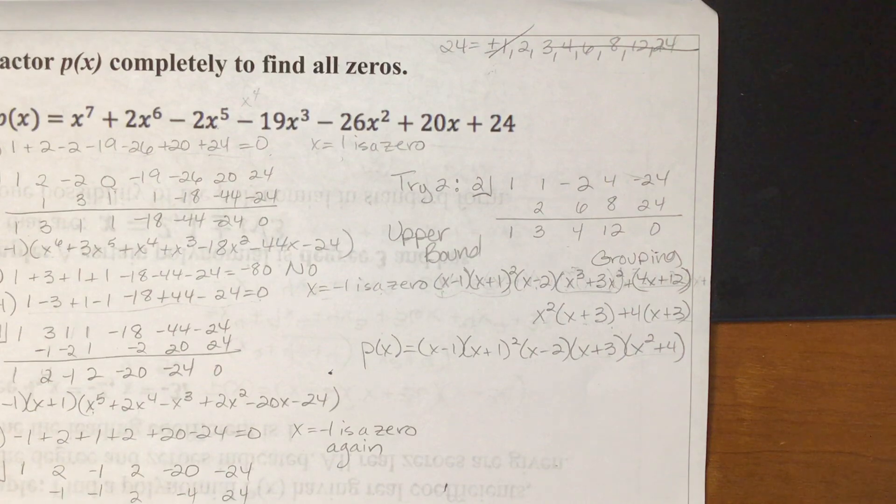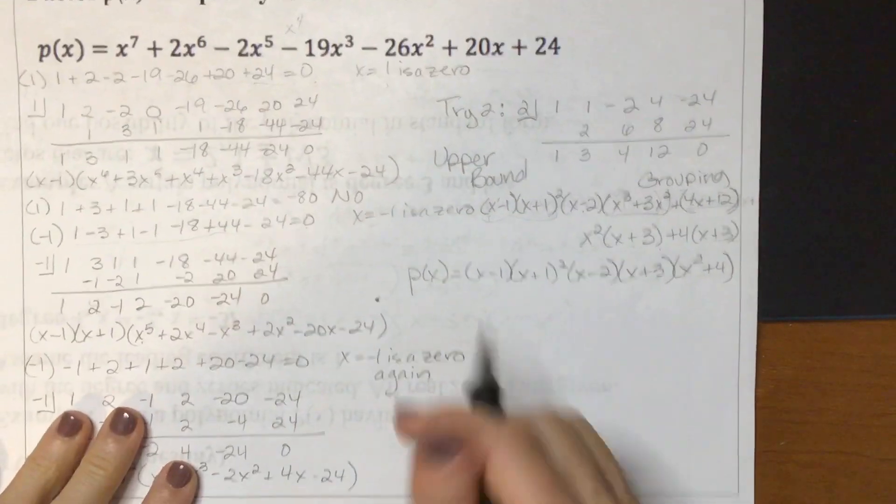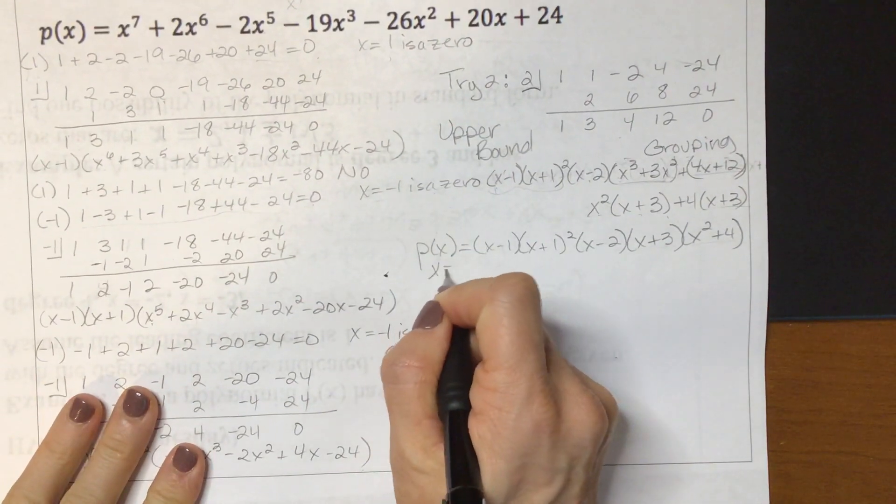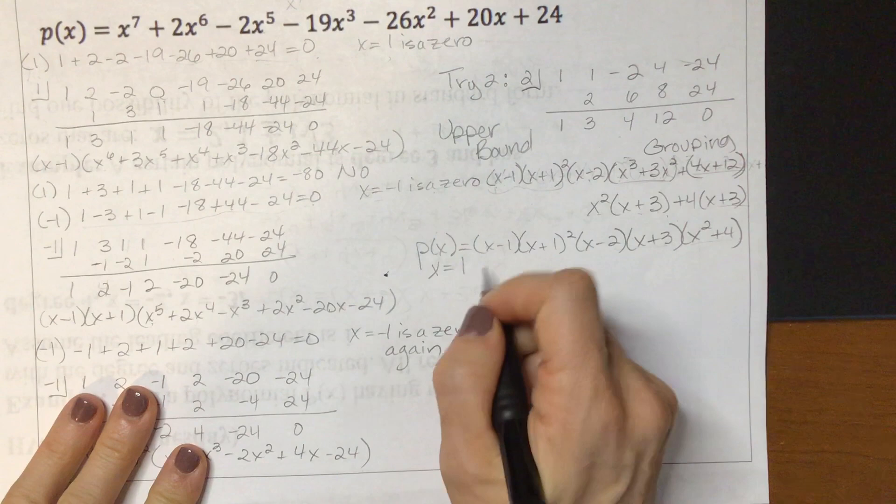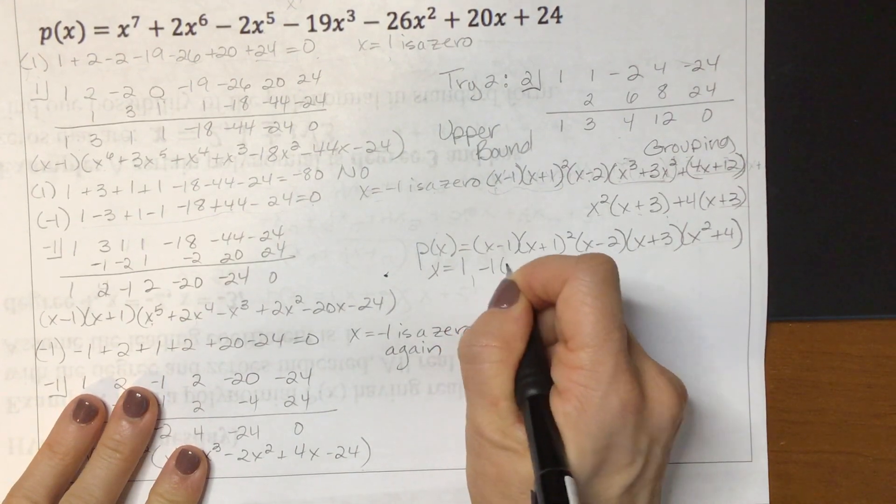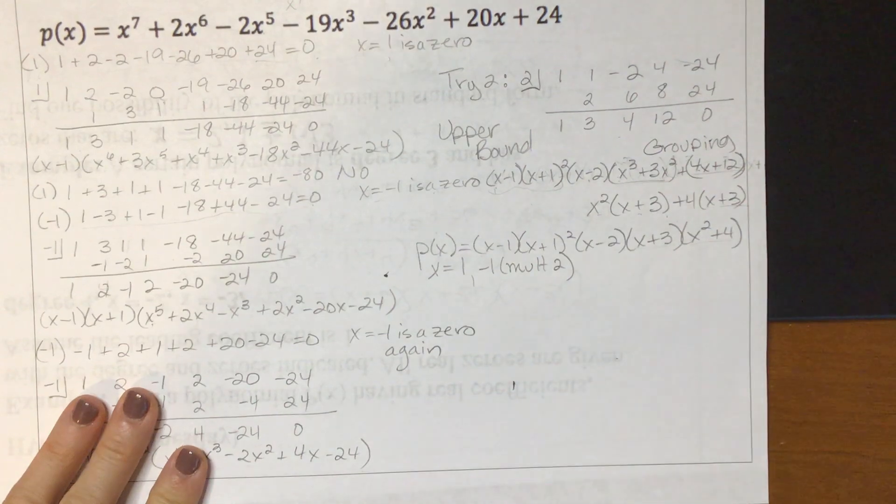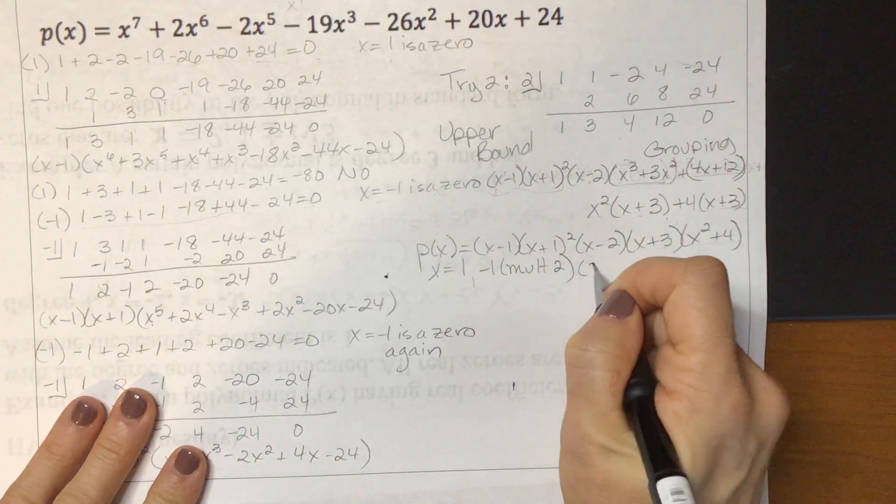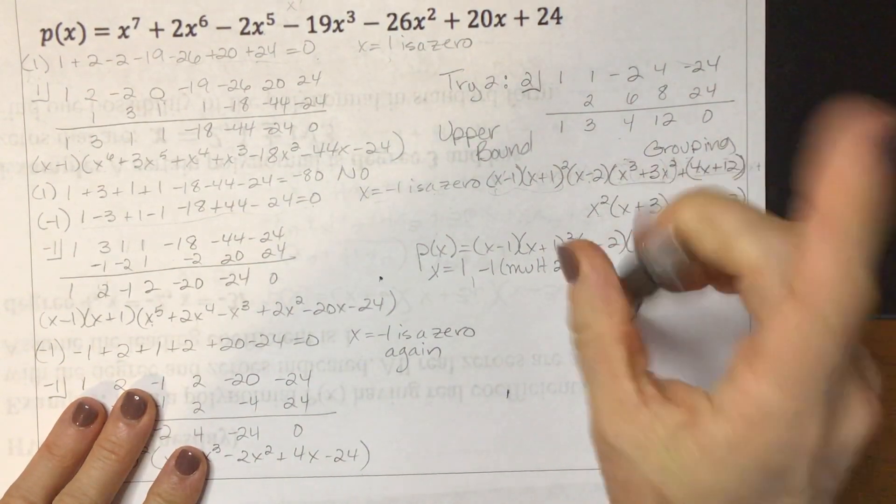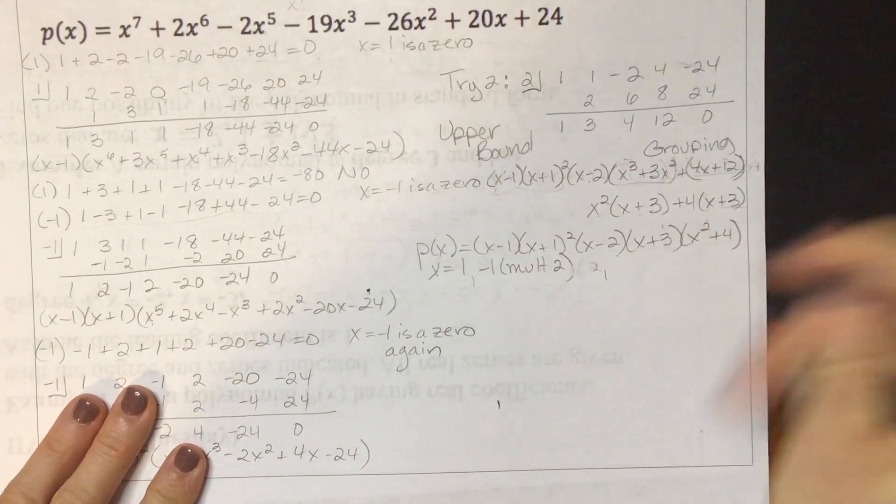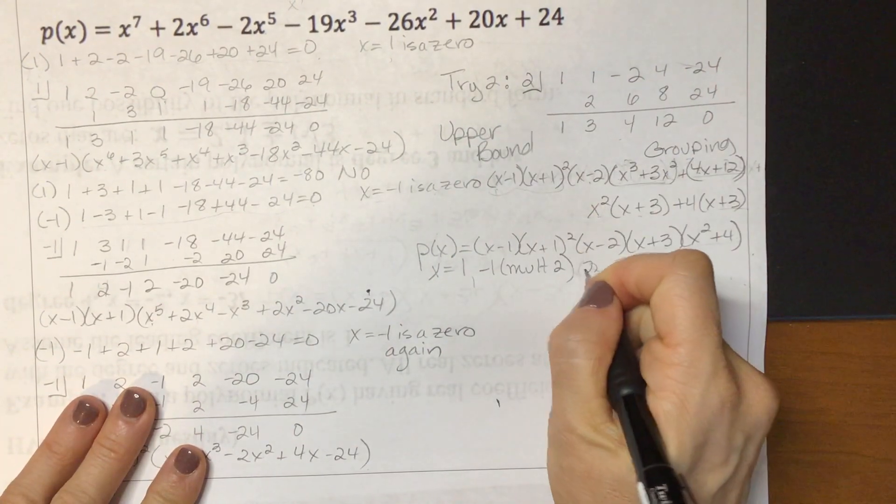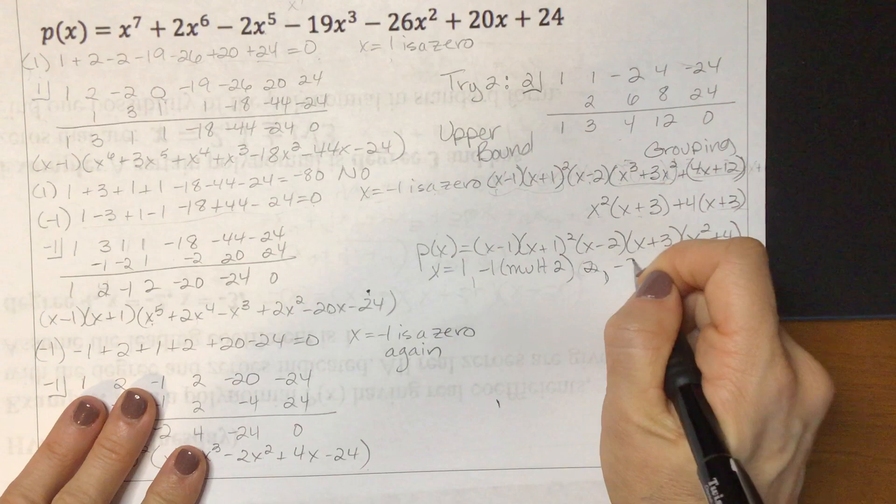It's not like x squared minus 4. And now I can list my zeros. I'm going to say x equals 1 is a zero. Negative 1 with multiplicity of 2. 2 is a zero. I didn't need a parentheses there, so just 2. Negative 3 is a zero.